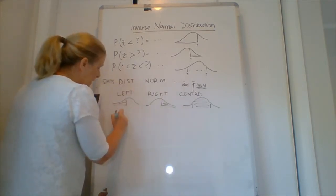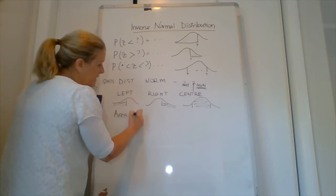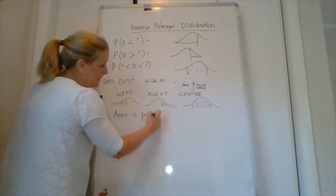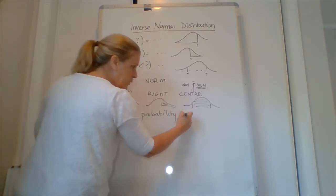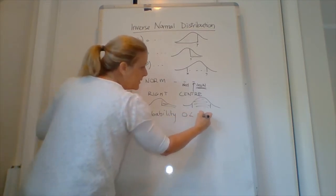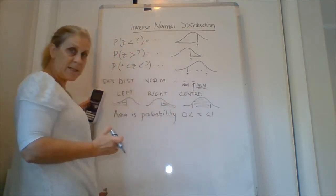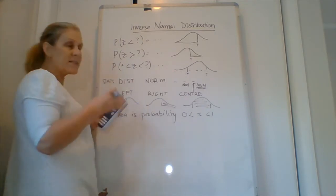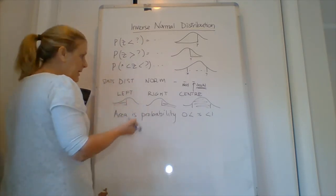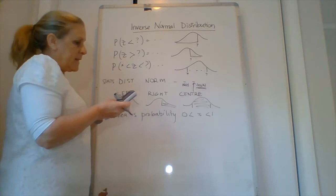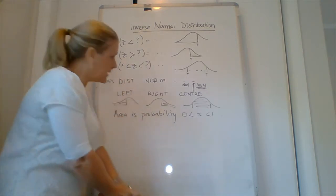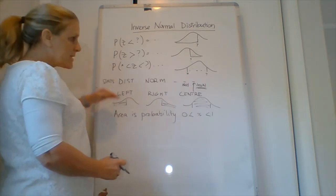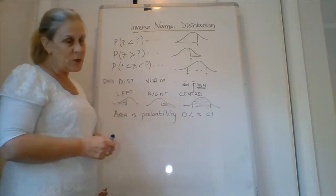The next thing it says is area. And area is the probability. So it has to be between zero and one because it's probability. So we want it as a point something something. And then we've got the standard deviation and the mean as we would normally have it. So those are the situations we've got. Let's have a look at a question.